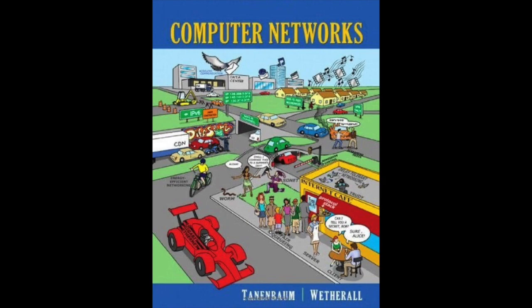The answer is subtle but crucial. The transport code runs entirely on the user's machines, but the network layer mostly runs on the routers, which are operated by the carrier, at least for a wide area network. If the network layer offers inadequate service—if it frequently loses packets or routers crash—the users have no real control. They cannot solve the problem by using better routers or adding error handling in the data link layer because they don't own the routers. The only possibility is to put on top of the network layer another layer that improves the quality of service.